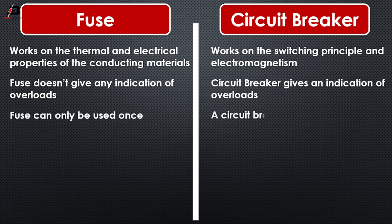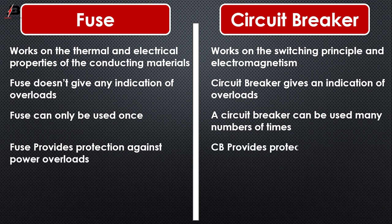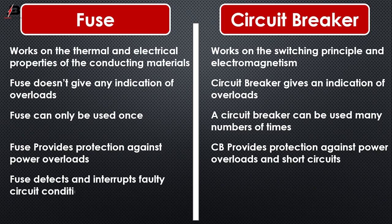A fuse can only be used once, whereas a circuit breaker can be used many times. A fuse provides protection against power overloads, while a circuit breaker provides protection against both power overloads and short circuit conditions.